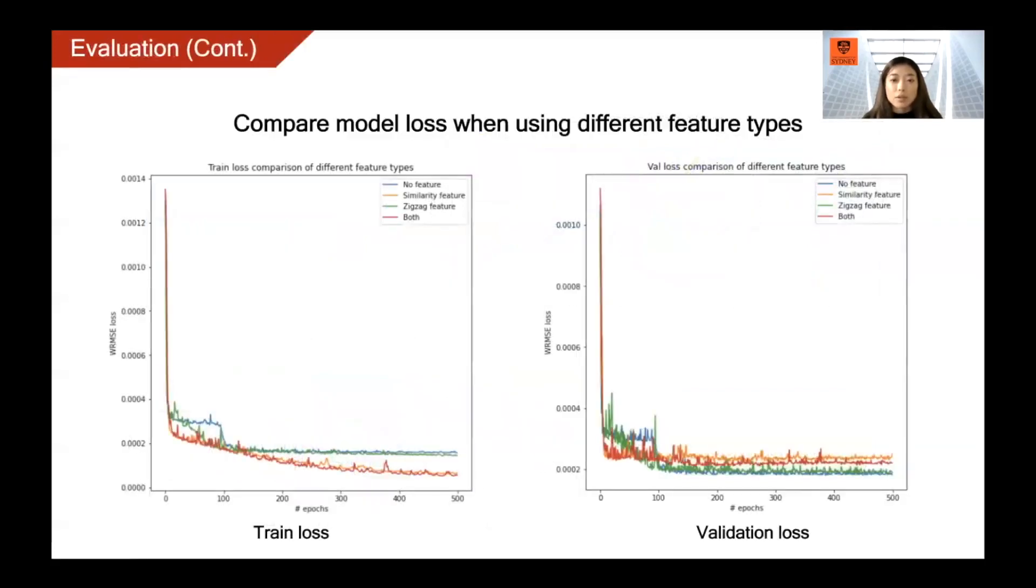We also compared the training and validation loss by other different types of features. This experiment is conducted on a similar dataset. When using only the zigzag feature, the model is trained slightly faster than using no features. When including similarity feature, although the model can fit the training data much faster, which is represented by a much lower training loss, it also causes overfitting.